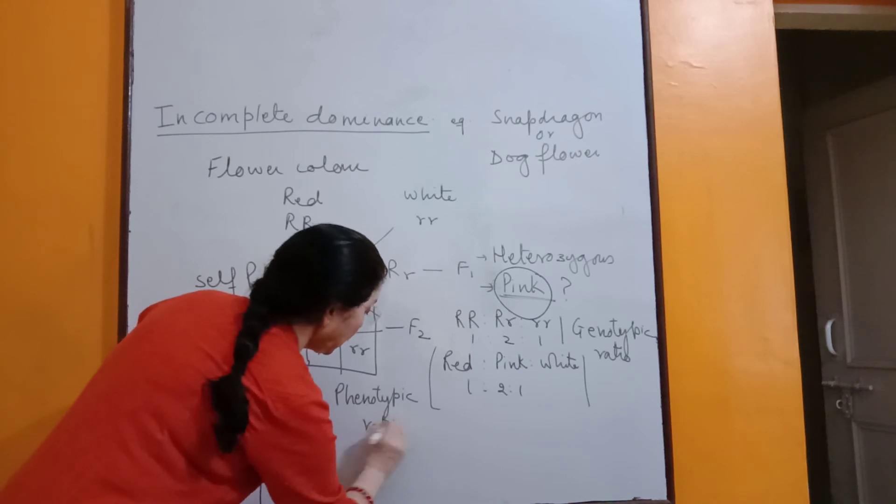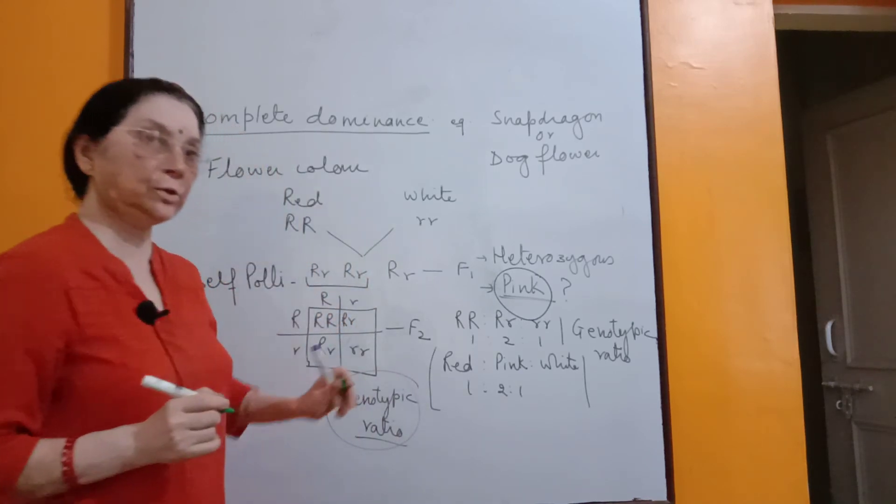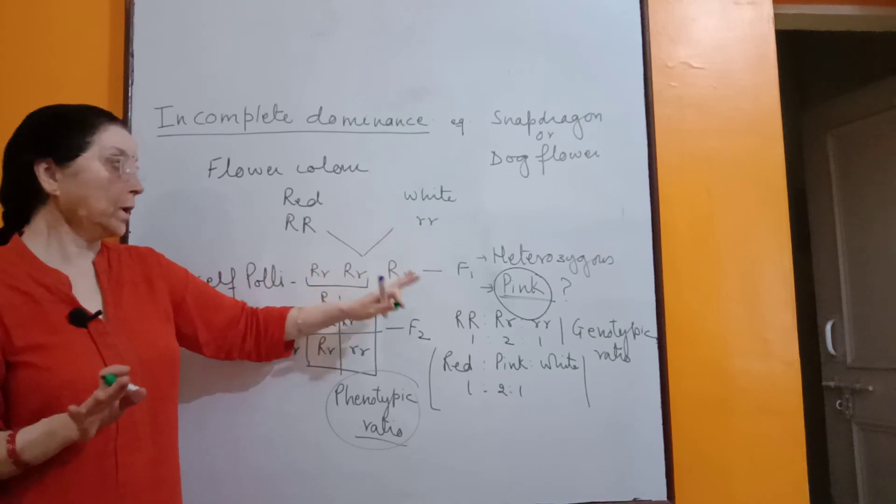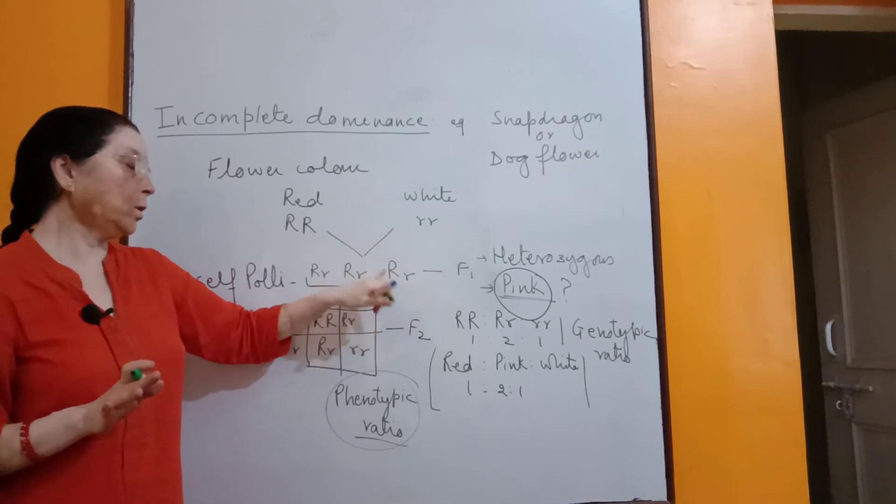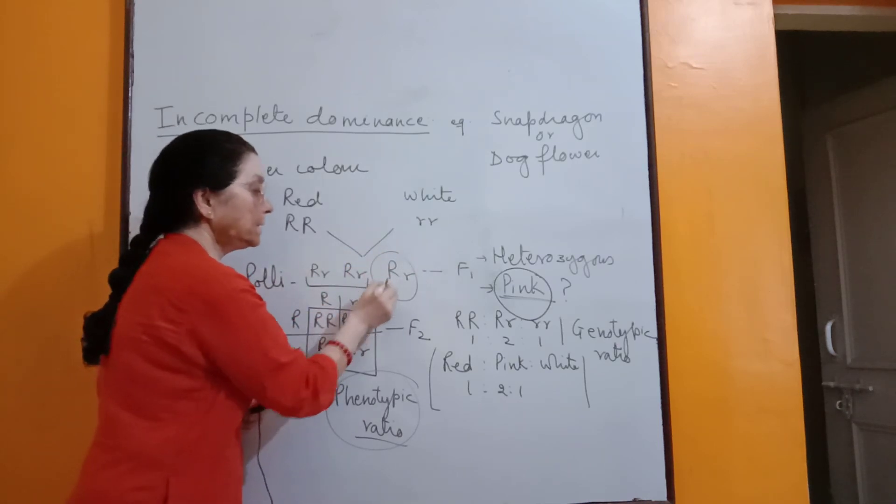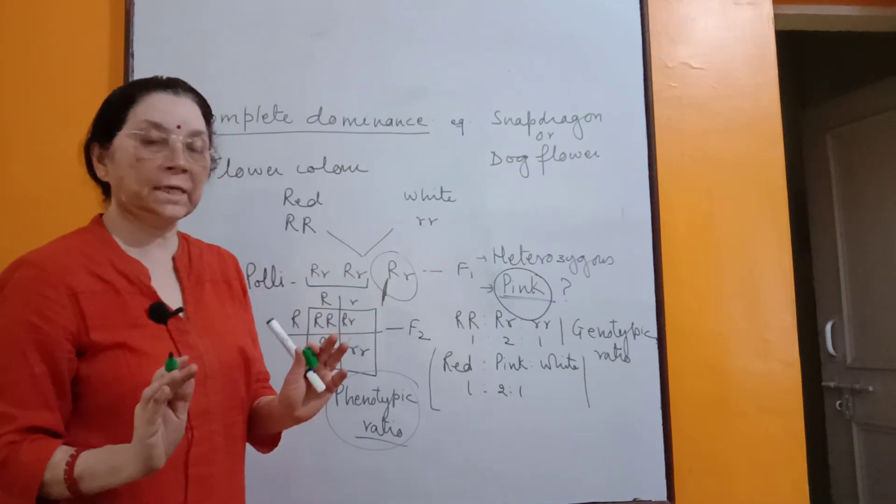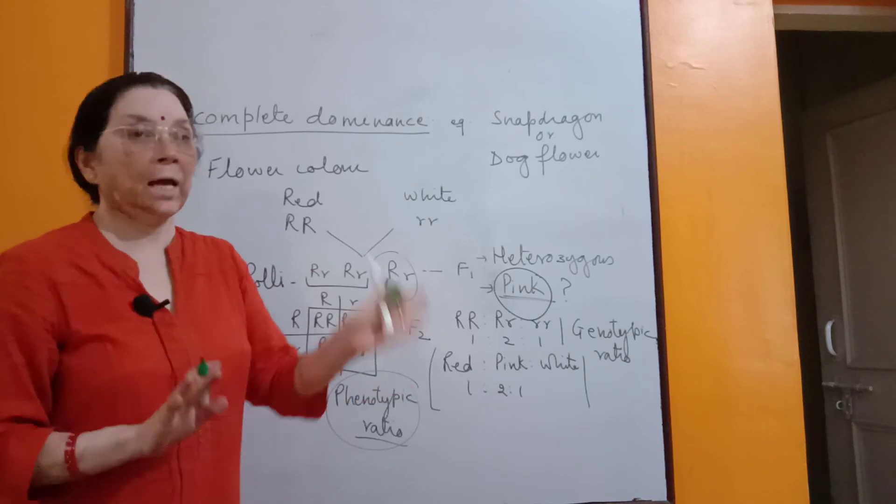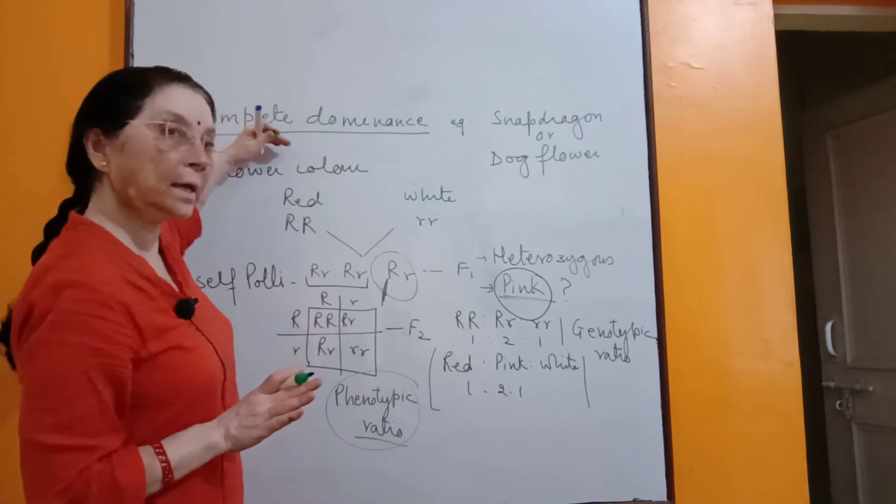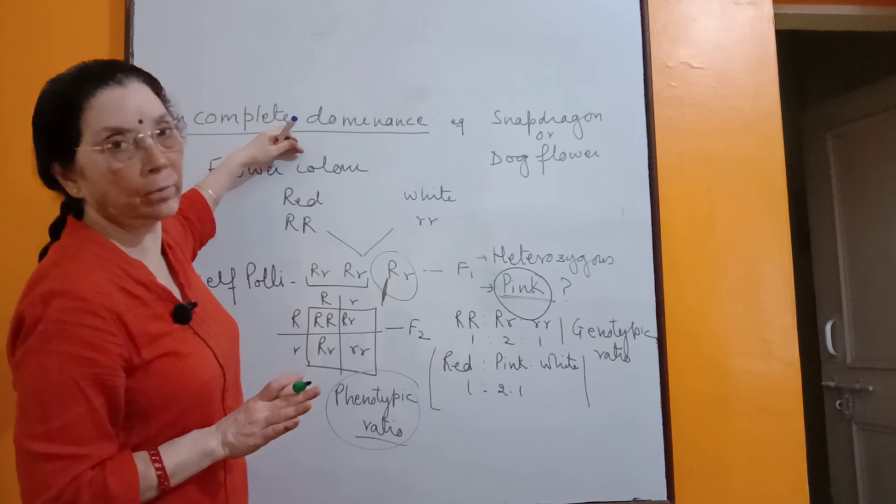So the genotypic as well as the phenotypic ratio under both conditions was the same. Why is it the same? Because under hybrid condition, capital R could not express itself completely and its partial expression is called incomplete dominance.